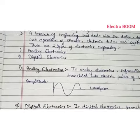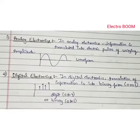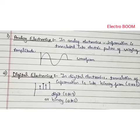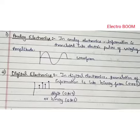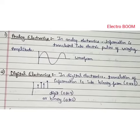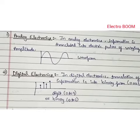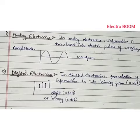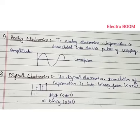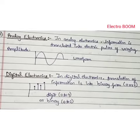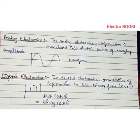The second type is Digital Electronics. In Digital Electronics, information is translated into binary form or digits. Binary form means 0 or 1, and digits range from 0 to 9.